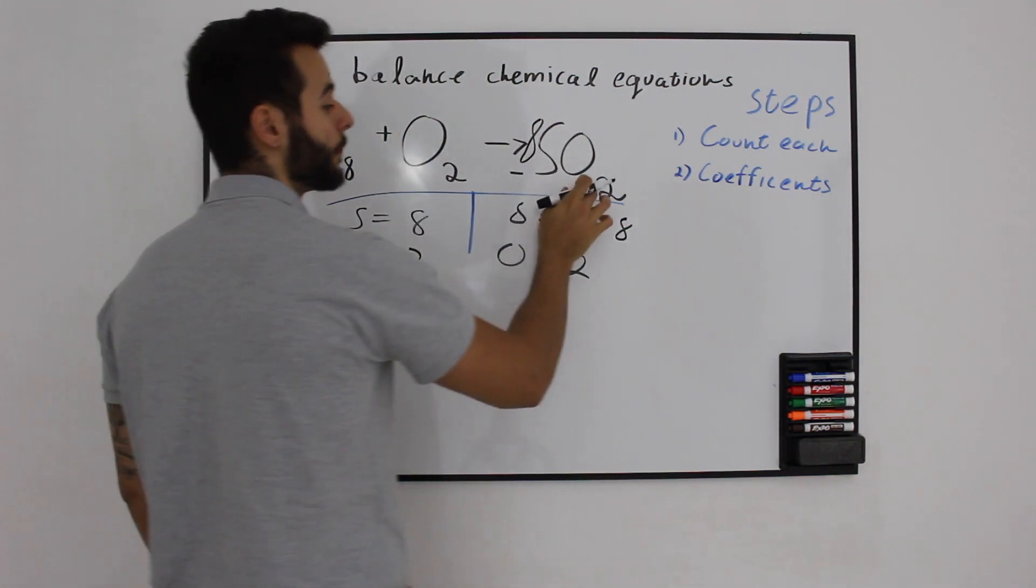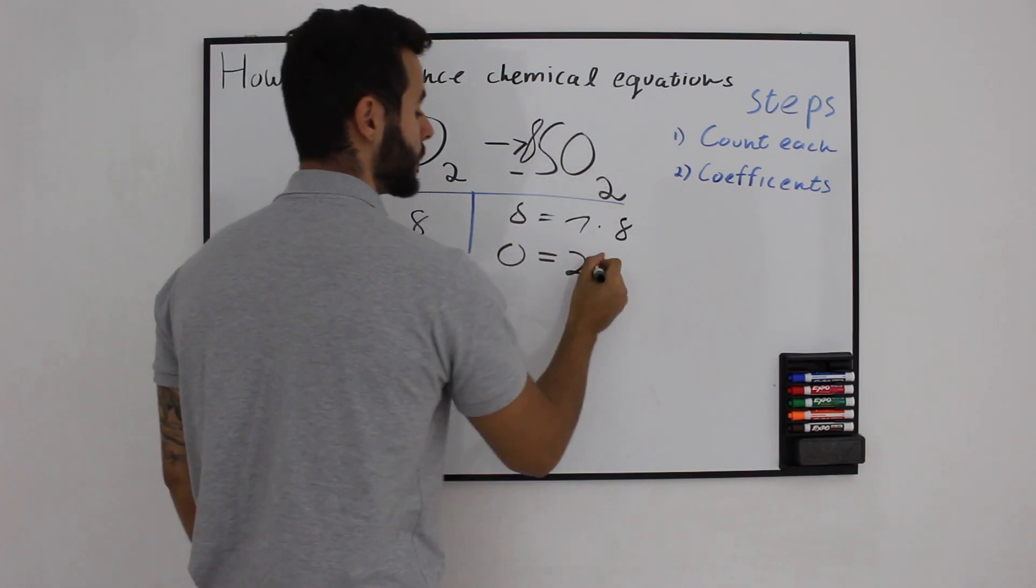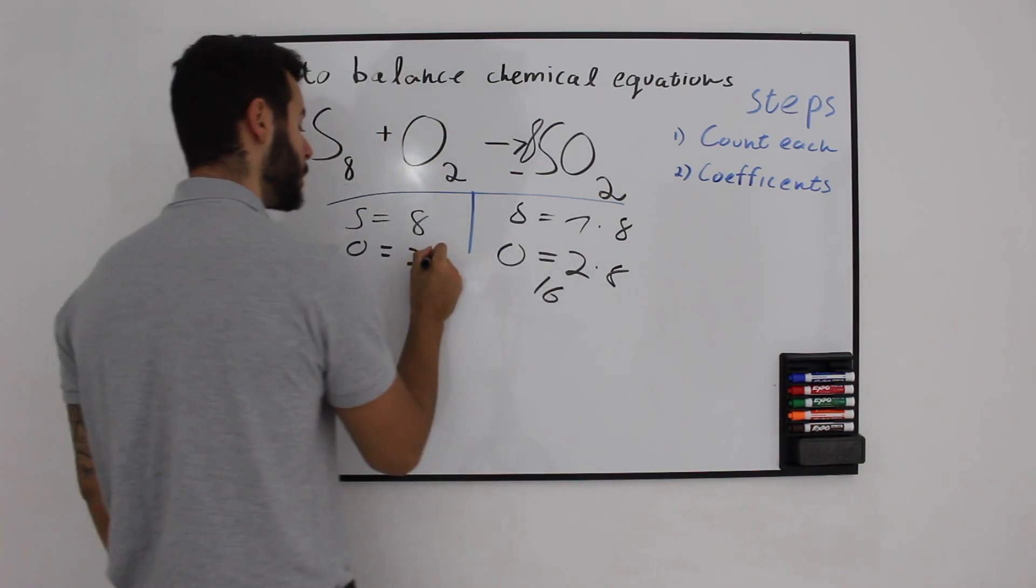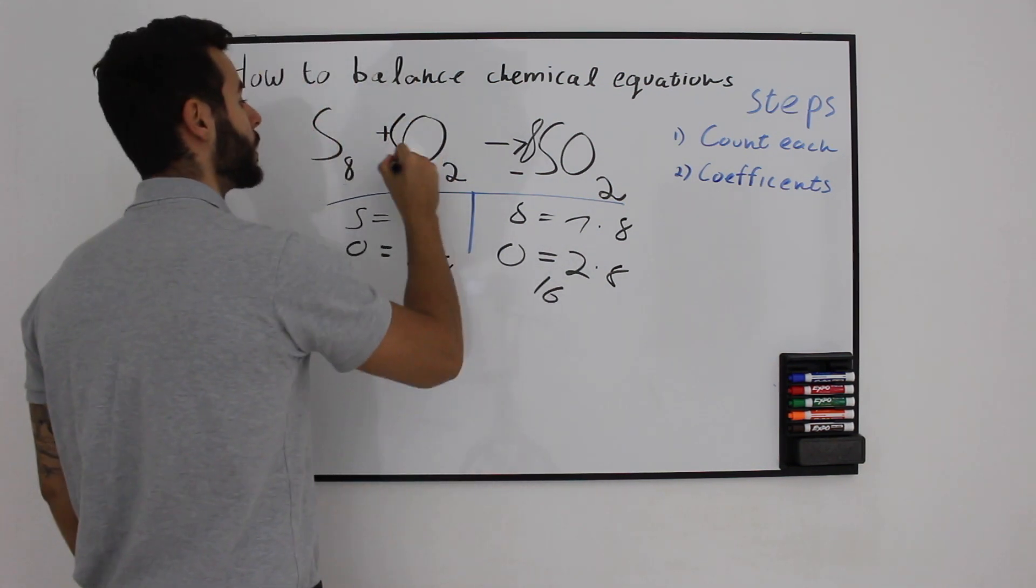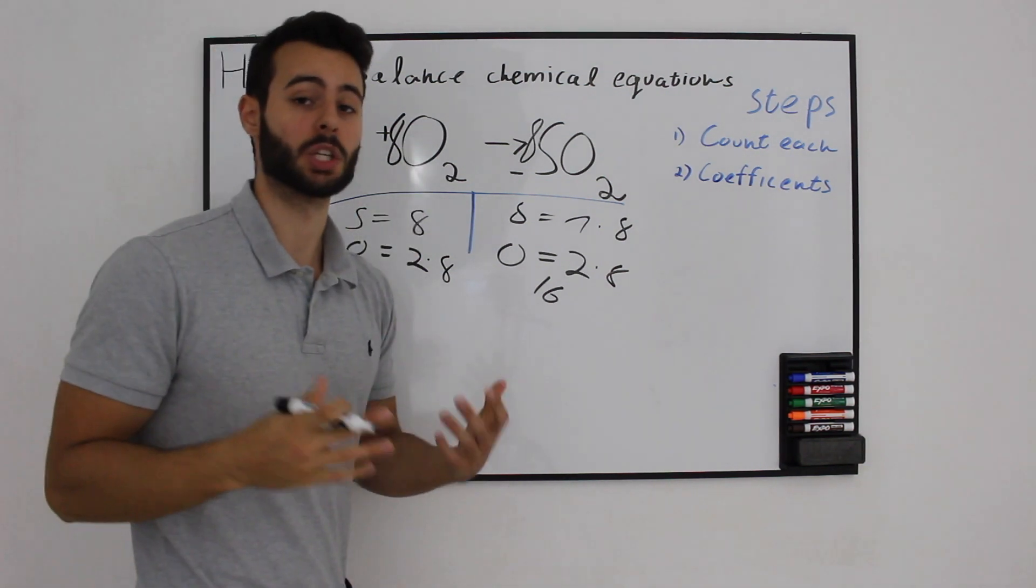Then we have oxygen 2 times. So 8 times 2 means 16. We have 16 on this side and 2 on this side. So we should multiply it by 8 to get a coefficient of 8 on this side. And now we have a balanced equation.